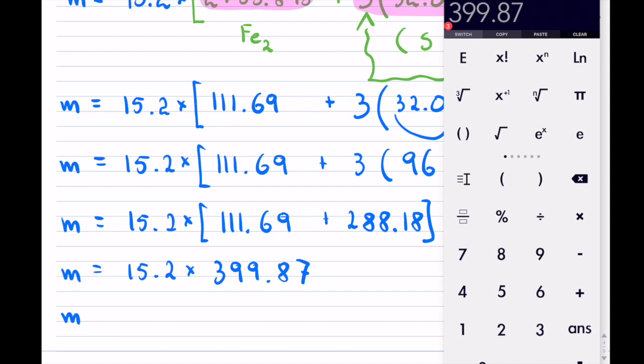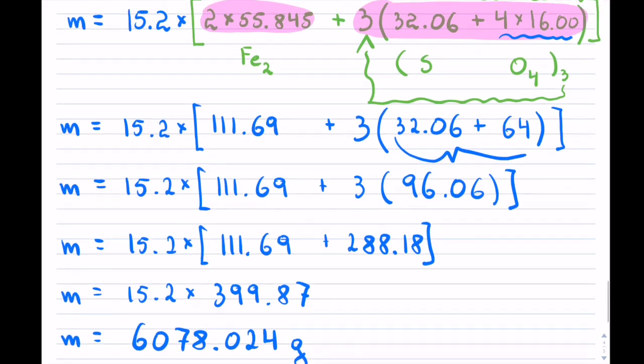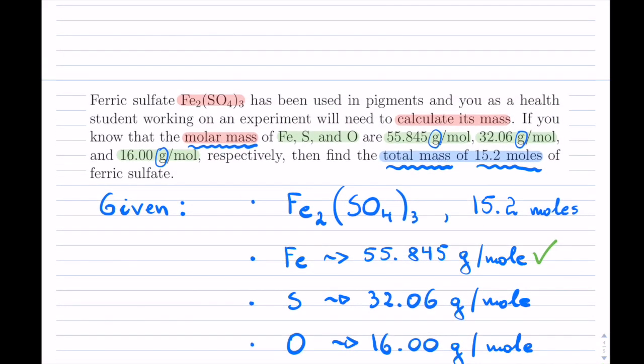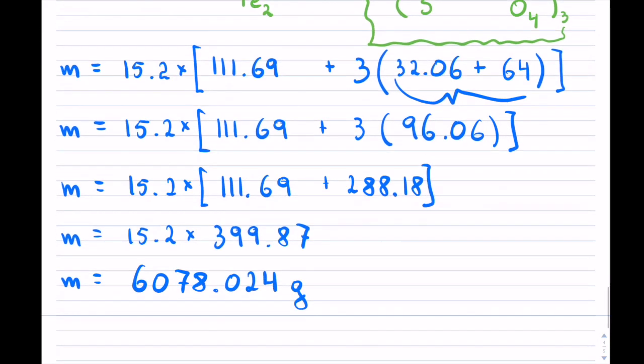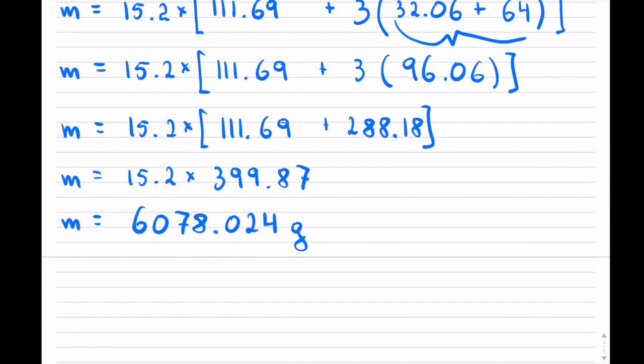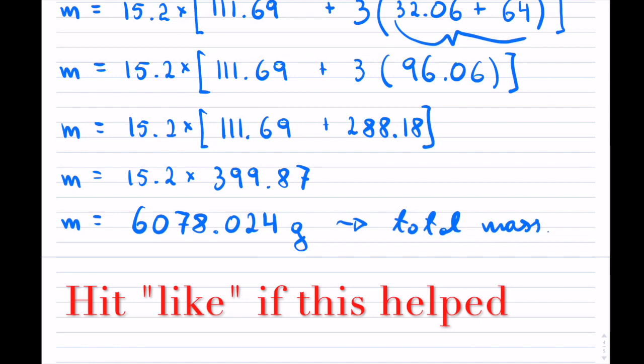Now we're going to get the full bracket here, and now it's the final multiplication times 15.2. And we said that was in grams. Let's check again at the end for rounding - did they ask? No, they didn't ask for any rounding, so we will keep the answer as is, and that would be your total mass. Thank you for watching.